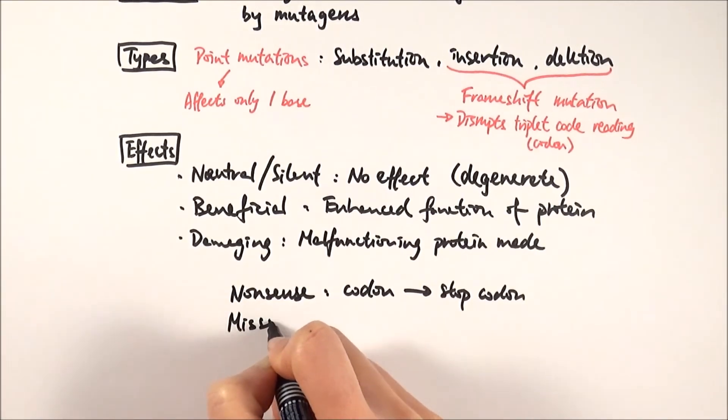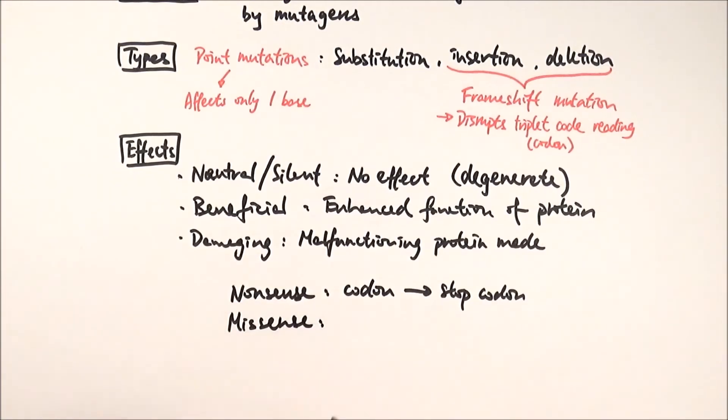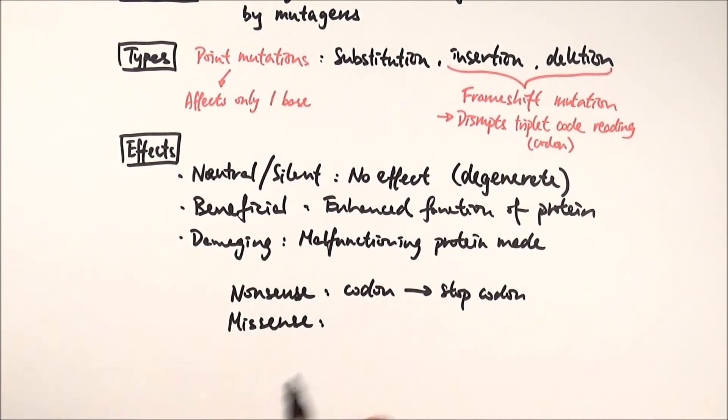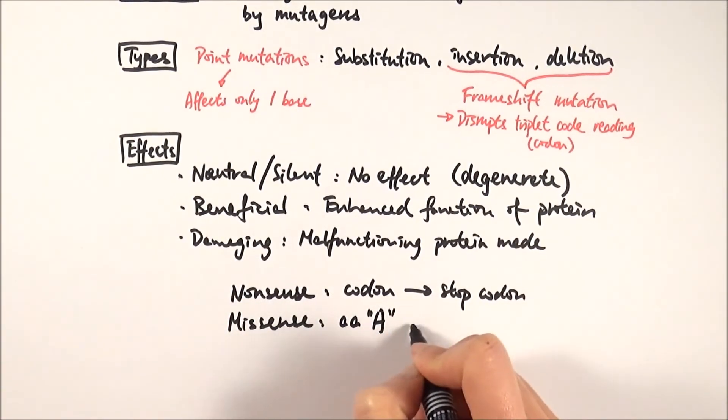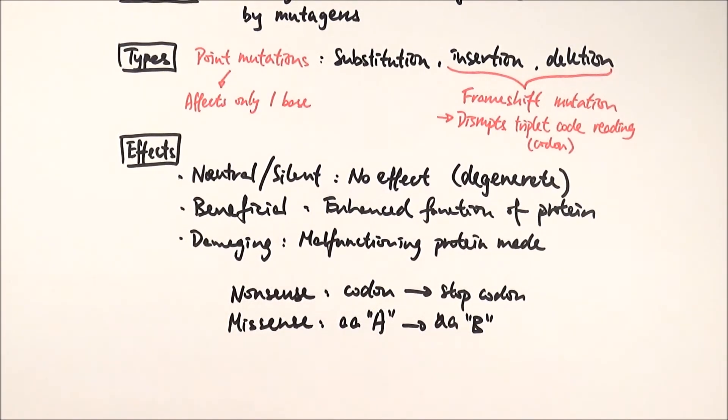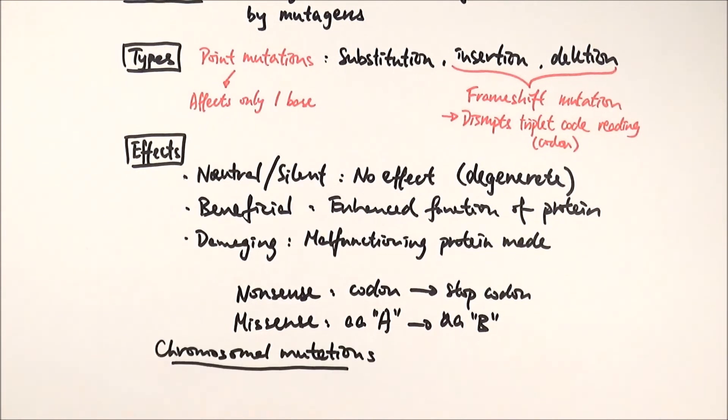Another type is called a missense mutation. That is like substitution in some sense, where you get a particular amino acid. So amino acid A has been turned into amino acid B. In this case, you got the change in amino acid, meaning your degenerate coding has failed in that sense.